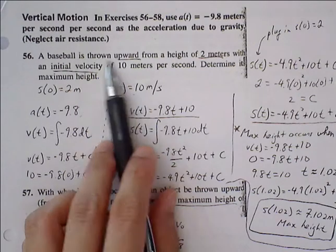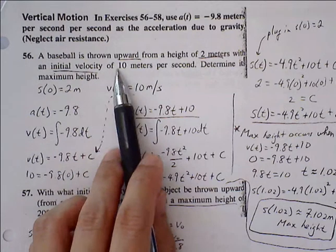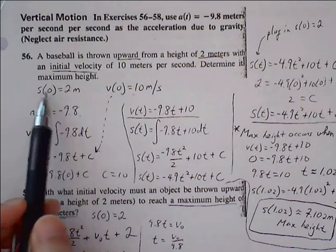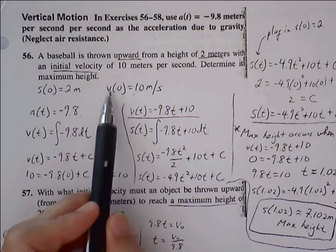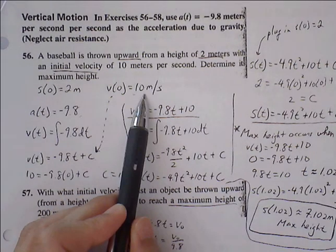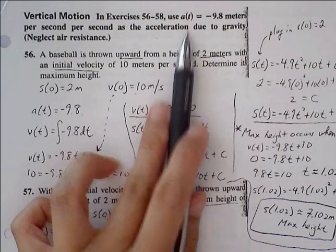A baseball is thrown upward from a height of 2 meters with initial velocity of 10 meters per second to determine its maximum height. We know initial position s₀ is 2 meters, initial velocity v₀ is 10 meters per second, and acceleration is -9.8 meters per second squared.